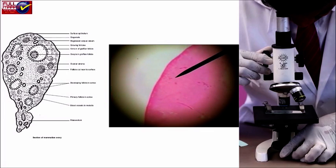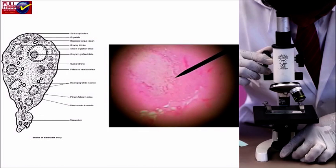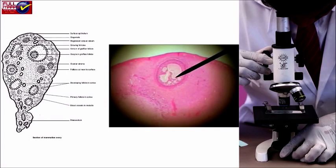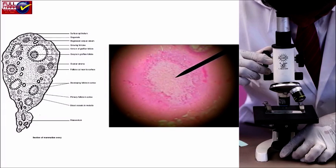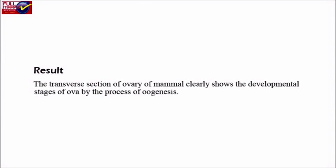Some granulosa cells accumulate to lift the ovum by forming a cellular mound called the cumulus oophorus. After ovulation, the follicular cells remaining in the empty follicle form a glandular endocrine structure called the corpus luteum, which secretes progesterone. Corpus albicans is formed by degeneration of the corpus luteum. Result: the transverse section of the ovary of a mammal clearly shows the developmental stages of ova by the process of oogenesis.